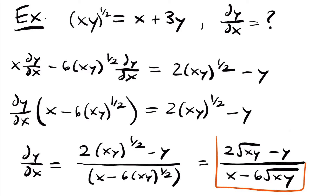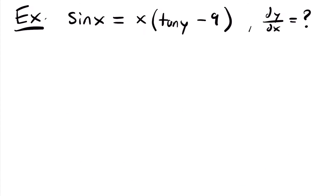Next we have the function sin x equals x times the quantity tangent y minus 9. Once again, we want to find the derivative dy/dx of this implicitly defined function. So we'll start by taking the derivative with respect to x of both sides.